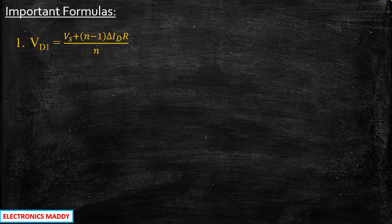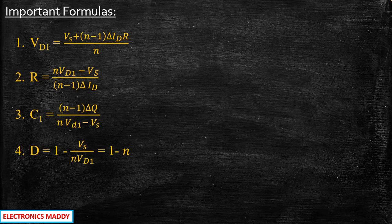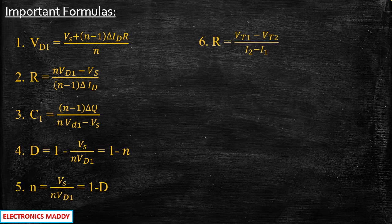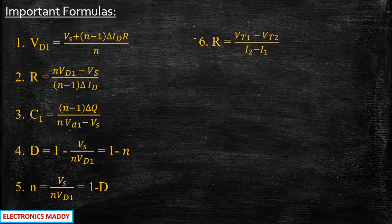The first and foremost important thing before solving any problem is you need to make sure you have all the formulas with you. I will be listing the formulas here so you can make a note of them. Formula number six was derived in parallel connection. The first three expressions were derived in detail and we also saw the definitions of derating factor and N in our previous videos.